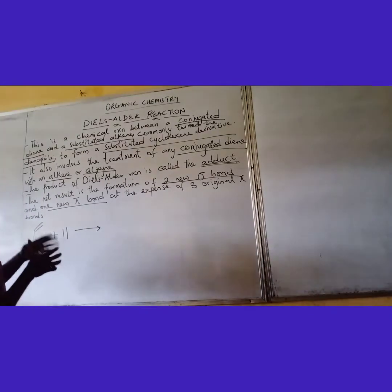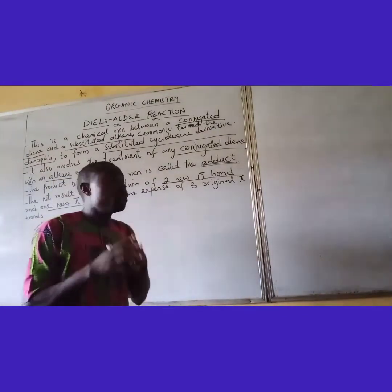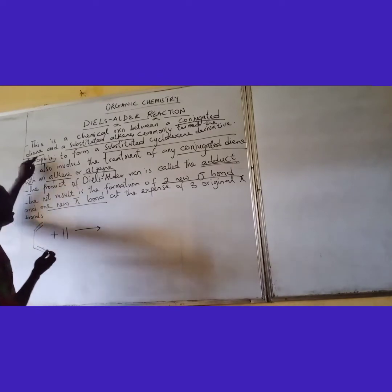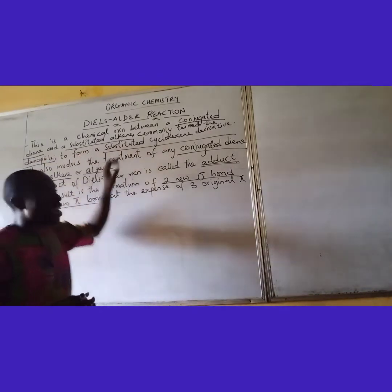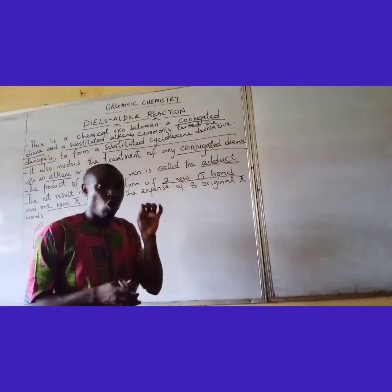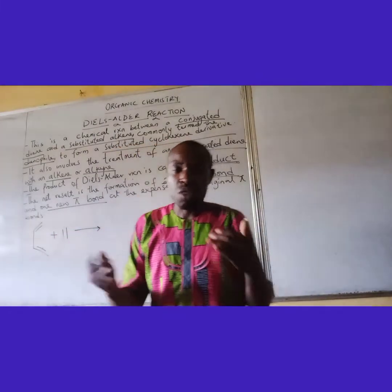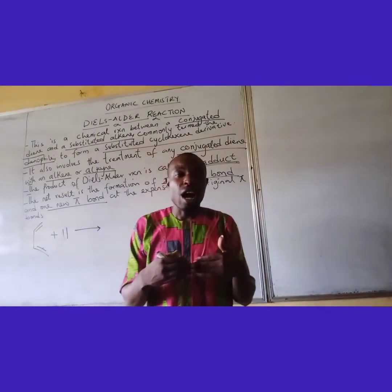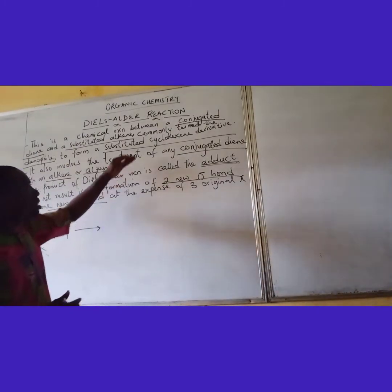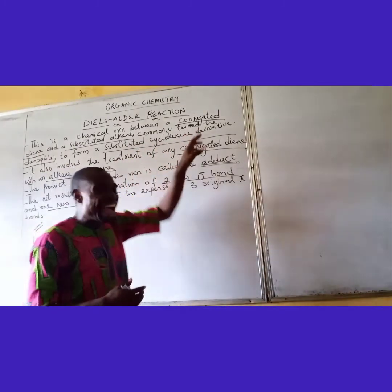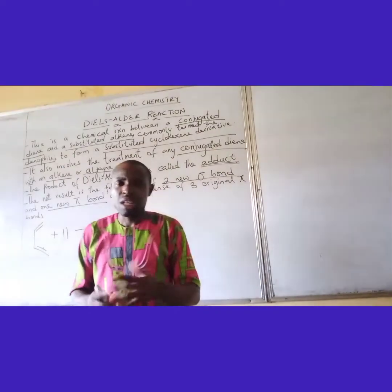The Diels-Alder reaction is a chemical reaction between a conjugated diene and a substituted alkene, which is commonly termed the dienophile. The product that is formed is a substituted cyclohexene derivative.